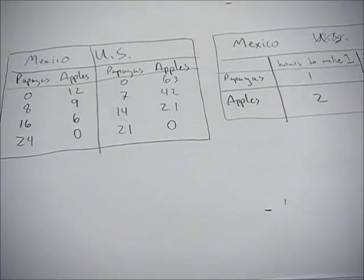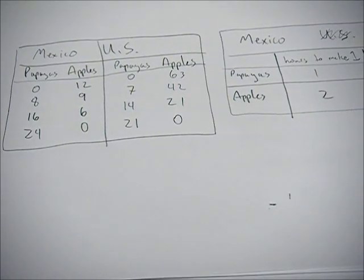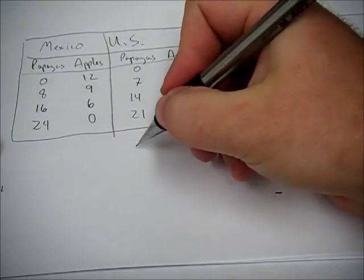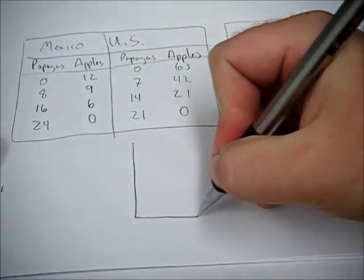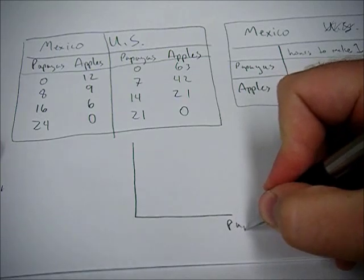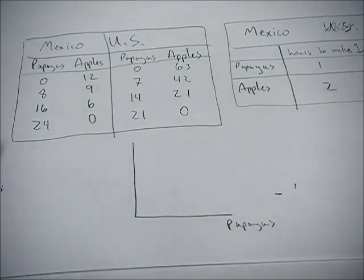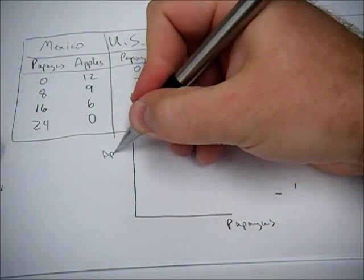You then want to draw the associated PPFs so you can get a visual representation of it. So here's a little sketch. Let's put papayas on the x-axis, apples on the y.